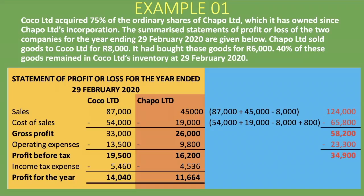For income tax expense, students often make a mistake by taking a tax percentage and multiplying it by the consolidated profit before tax — that would be incorrect. The income tax expense is the one accounted for by each specific entity within the group. So we simply add the parent's income tax expense of 5,460 rand plus the subsidiary's 4,536 rand, giving a total group income tax expense of 9,996 rand. Profit before tax of 34,900 minus 9,996 gives a profit for the year of 24,904 rand.